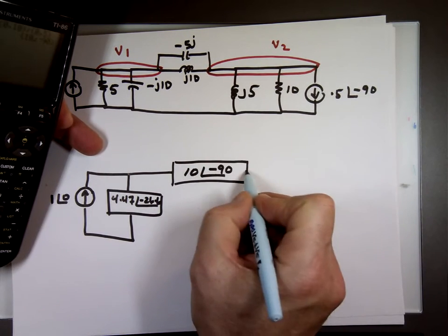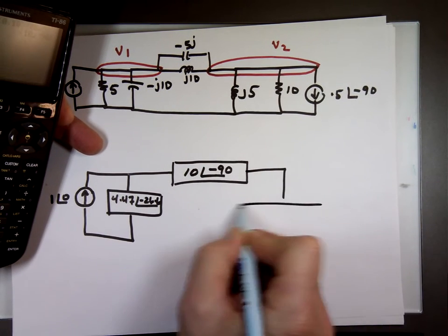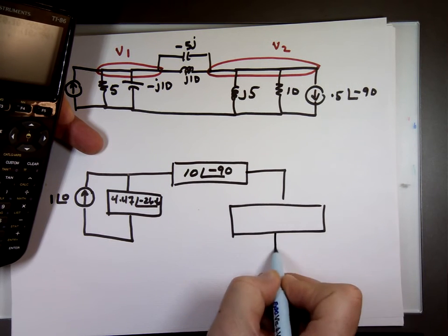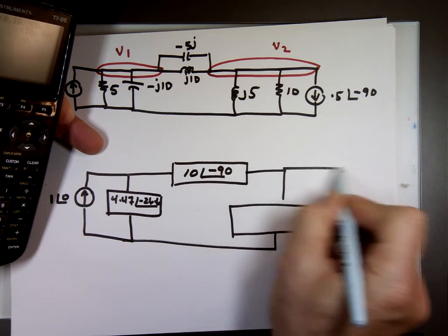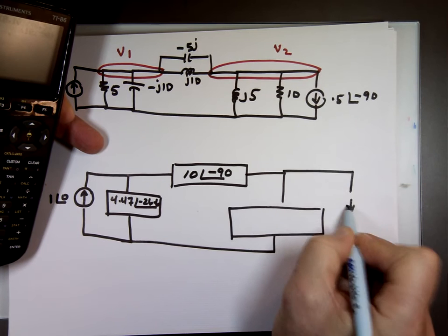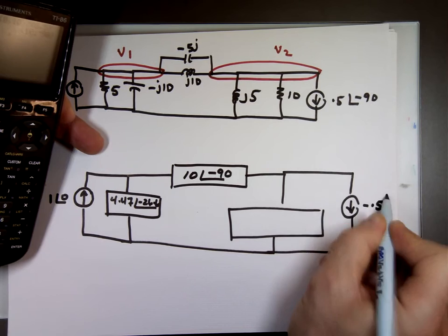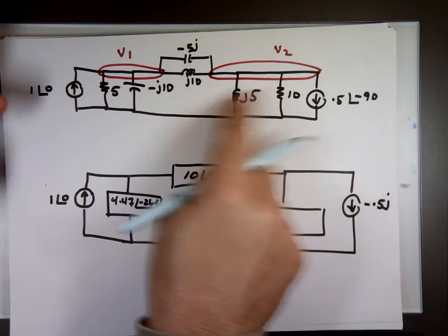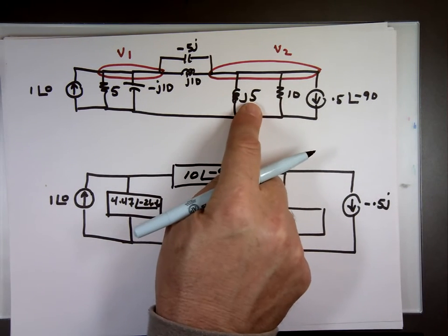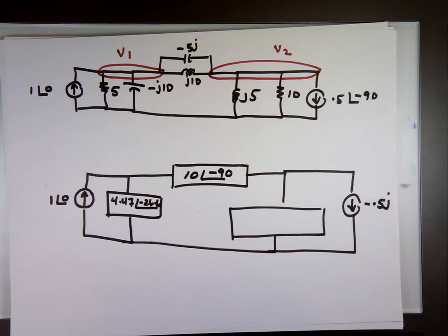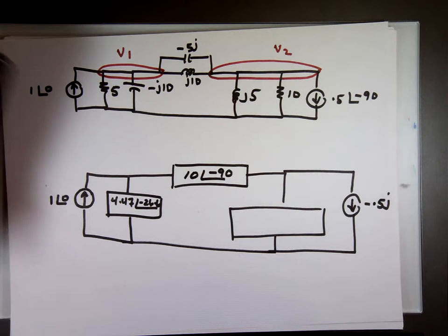These two again in parallel, the product over the sum. 0 comma 5j. So what's this value? The product over the sum, 10 times 5, that's 50j, 0 comma 50, divided by the sum of them which is 10 comma 5. And that's 4.47 angle 63.4.